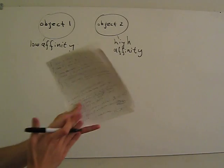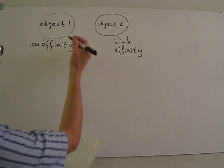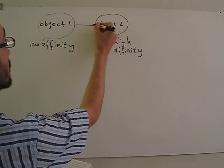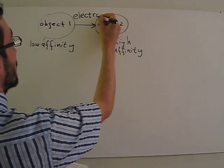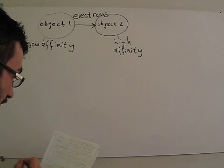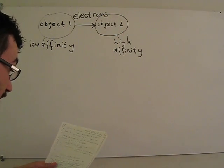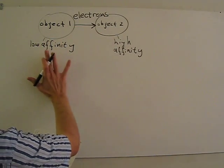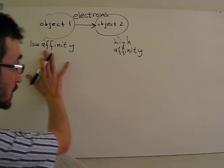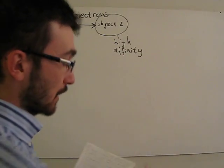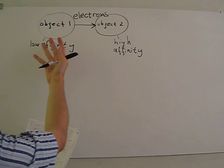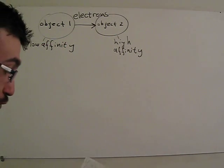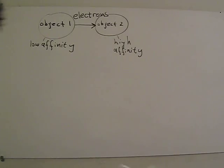So if you rub these two objects together, there will be a transfer of electrons from object 1 to object 2 — from object 1, which has low electron affinity, towards object 2, which has high electron affinity. And hence, after this, object 1 will be positively charged and object 2 will be negatively charged.